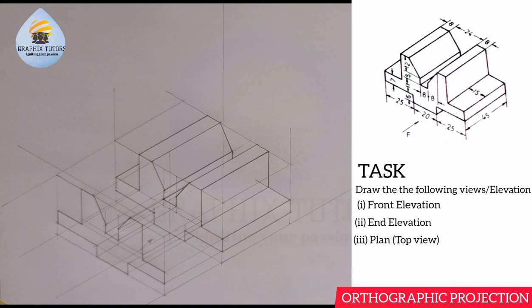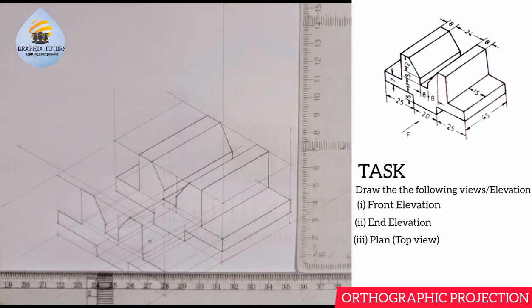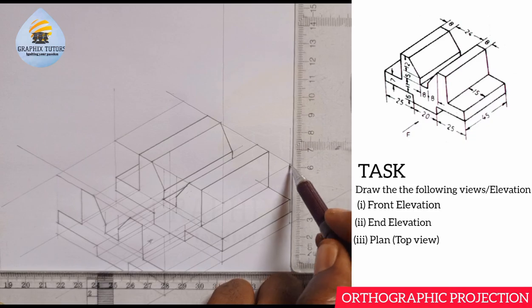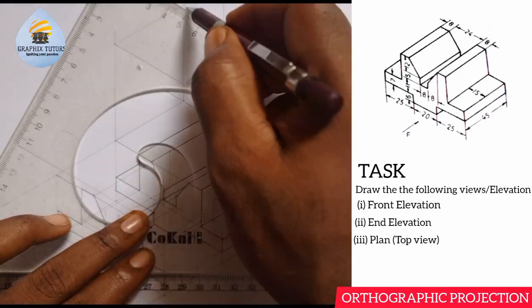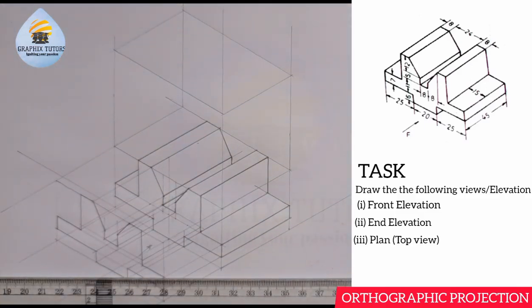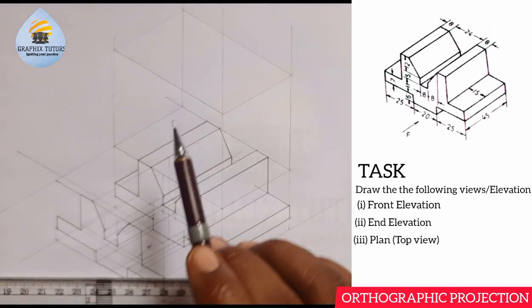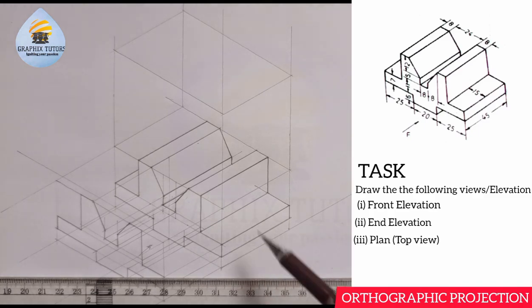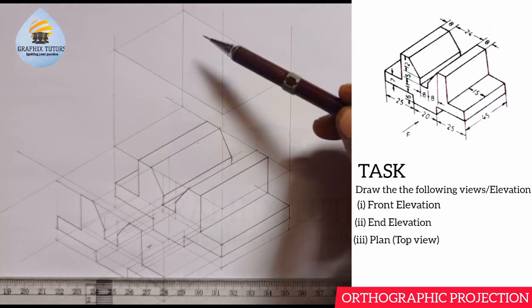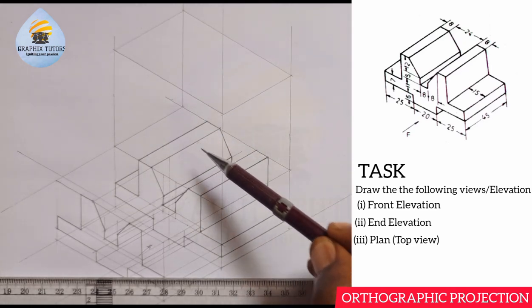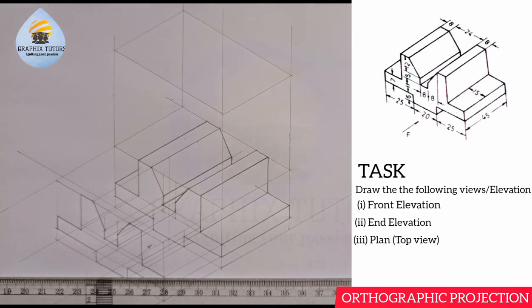Similarly, we are looking at the plan. What are you going to see? The plan also has its own plane. Let's see how the plane of the plan will look like. This is the plane of the plan — looking from the top, your image will be on this plane. That's the three dimensions, which means three planes. If I cast this image on this plane, I'll be seeing from the top, which we call the plan.